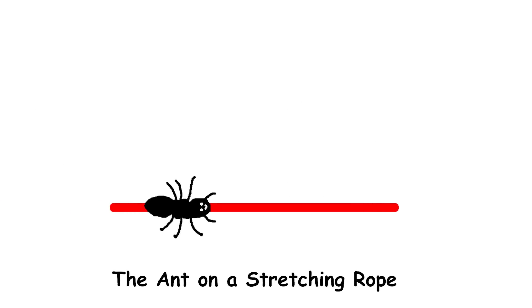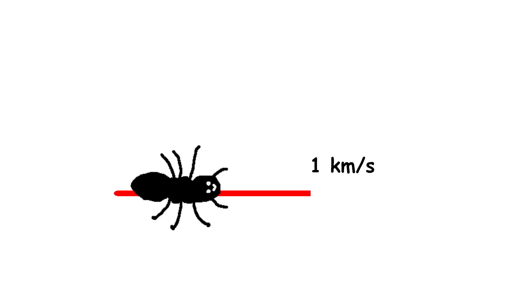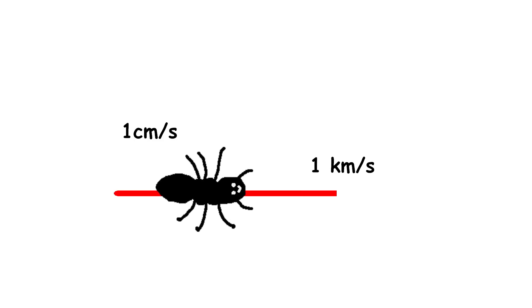The ant on a stretching rope problem. Imagine an ant standing at one end of a rubber rope that's initially one kilometer long. The ant crawls at a steady pace of one centimeter per second.